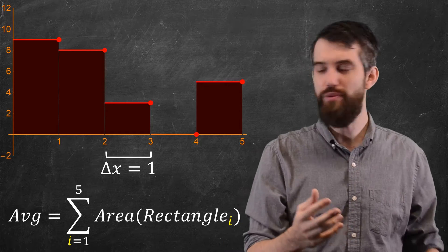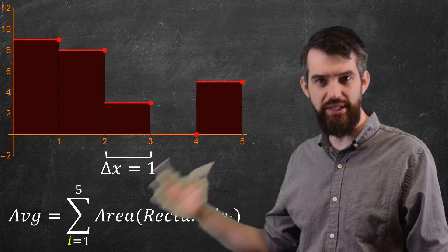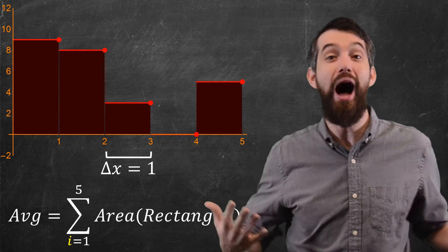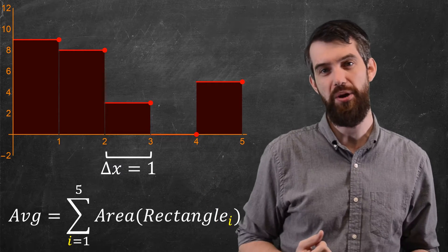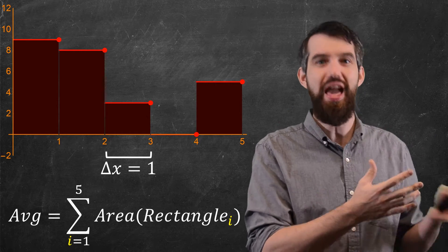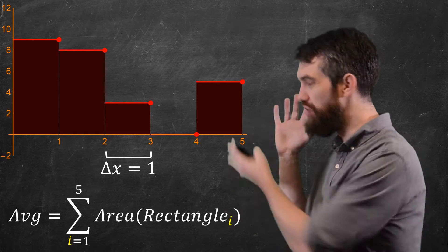And in my formalism, I write it with my sigma notation, my sum from 1 up to 5 as I have 5 rectangles, and I call it the rectangle sub i to denote the i-th rectangle. So this has been one way to interpret the average of a list of numbers in this sort of geometric way.